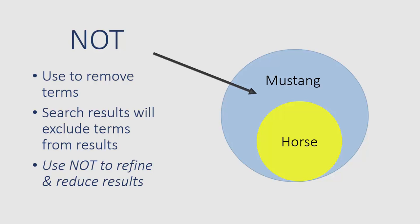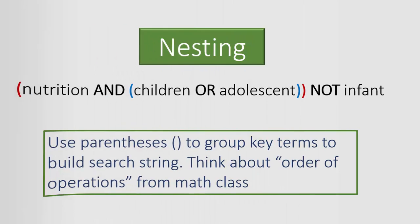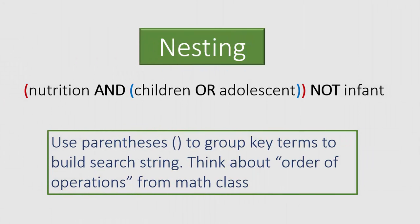Nesting is using parentheses to group search terms to build better, faster, stronger searches. And yes, math comes into play again when using parentheses — think back to ORDER OF OPERATIONS. In this example, the database will look for children or ADOLESCENT together, then add NUTRITION to further filter results, and finally will remove results containing INFANT. Use nesting with a single search box and across databases.